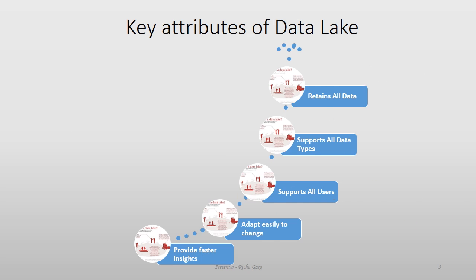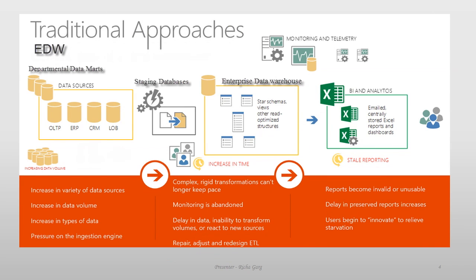Let's go back to Enterprise Data Warehouse and see the differences. Enterprise Data Warehouse can be defined as central repositories of integrated data from one or more data warehouses. EDW stores current and historical enterprise-level data and is used for creating trending reports for senior management reporting, such as annual and quarterly comparisons. If you look at this image, it shows different departmental data marts and data warehouses feeding into staging databases and forming an enterprise-level data warehouse.